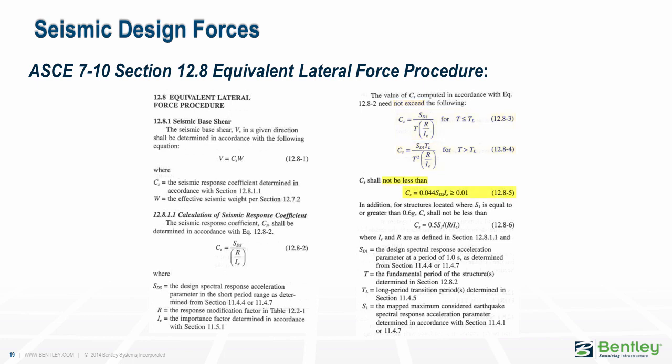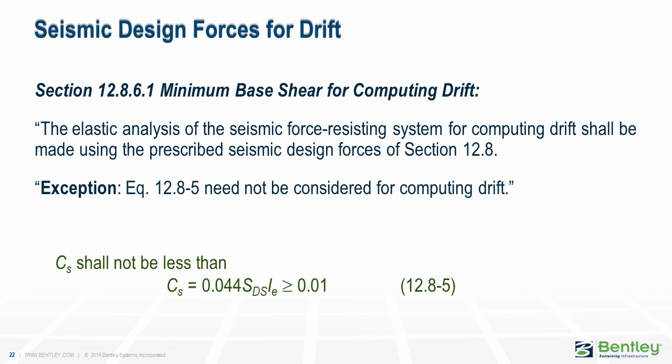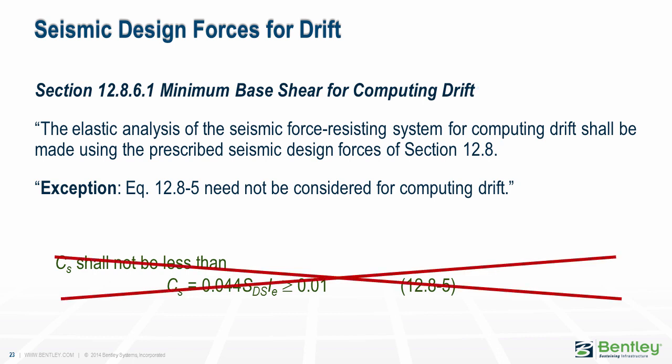There is also a minimum value for which the structure must be designed, with a potentially greater minimum limit for structures in areas of higher seismicity. The story forces are used for both the design of members for strength and in the determination of story drifts. However, in the calculation of base shear used in the investigation of drift, there is an exception indicating that equation 12.8-5 does not need to be considered. Equation 12.8-5 dictates a minimum value of base shear, so with the exception, there is no minimum value unless dictated by equation 12.8-6. This means that drift can potentially be investigated using story forces smaller than those used for strength design.